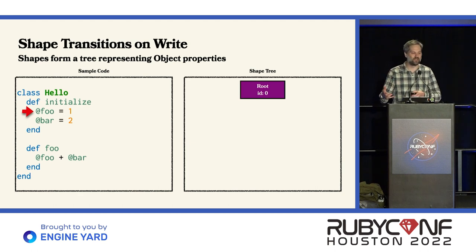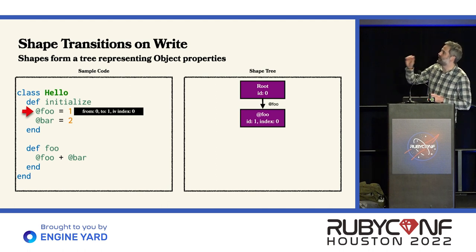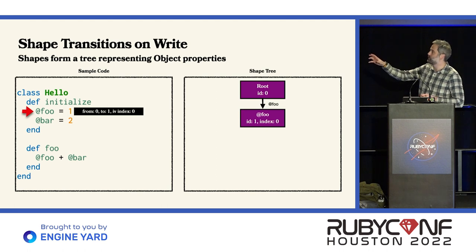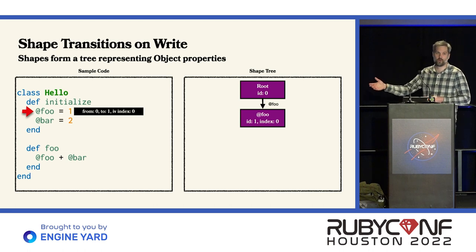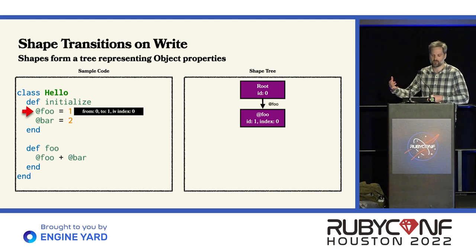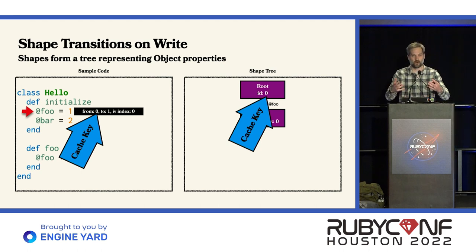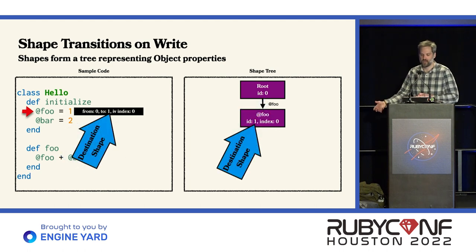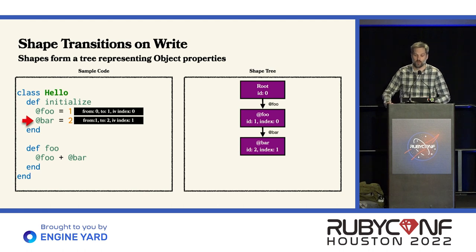The tree data structure is built every time we add an instance variable, every time we write to something. When we write the value foo, we start out at a root shape. Writing the value foo creates a new edge in this tree, and we cache the values from this new node inside the inline cache. Writing foo: the outgoing edge foo did not exist, so we write a new node with the outgoing edge foo, and cache that it came from shape zero, going to shape one, and that we set the instance variable at IV index zero. We do the same thing with bar. Our cache key is the shape that we came from — the originating shape. We also cache the destination shape as well as the IV index. So we go from shape ID one to shape ID two. It's a linear tree — maybe a tree trunk.